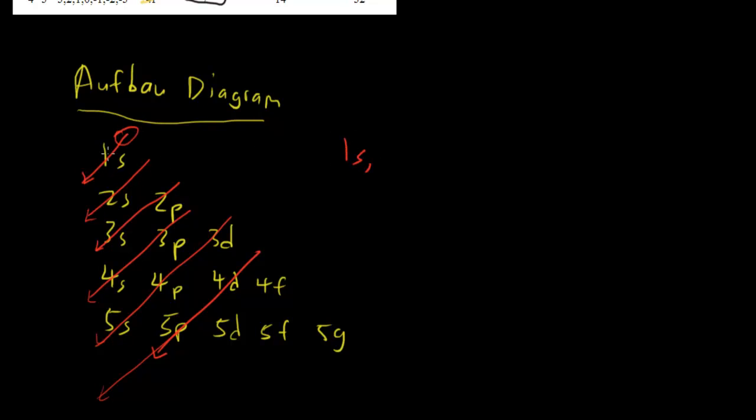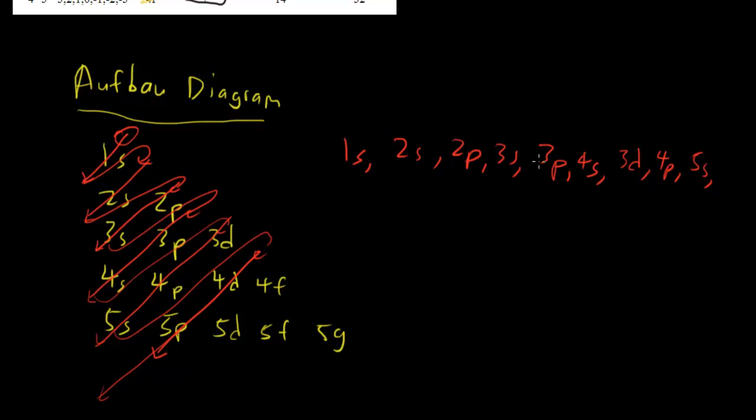So how do we use the Aufbau diagram? Well, we just start off at the top here. 1s. And we just go down the row. And once we reach the arrow, we go to the next row. We have 2s now. And we go down the arrow. So we come to 2p. Then we go back up to 3s. Then to 3p. Move down to 4s. And note how we skipped 3d. Now we go back to 3d, then to 4p, then to 5s, then all the way back up to 4d. And it goes on and on. So this diagram is really useful for helping you memorize how the orbitals are arranged in terms of increasing energy order.